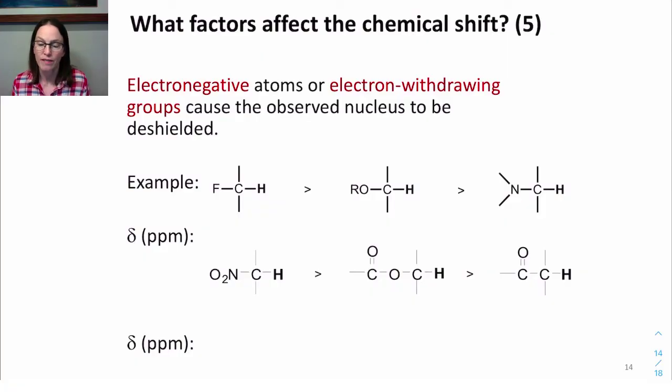The next thing we're going to look at are the factors that affect chemical shifts. There's five main factors to think about. So I've already mentioned electronegative atoms, or electron-withdrawing substituents, they cause the observed nuclei to be deshielded.